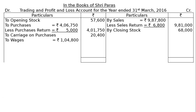Next one is to wages, that is Rs. 1,04,800, and less cycle shed Rs. 20,000. As per adjustment number 4, wages include a sum of Rs. 20,000 spent on construction of a cycle shed. Hence, this cycle shed wages will be deducted out of the normal business wages. And it will be added to the building in the balance sheet's asset side under the head fixed assets. In the final column, you can have Rs. 84,800.